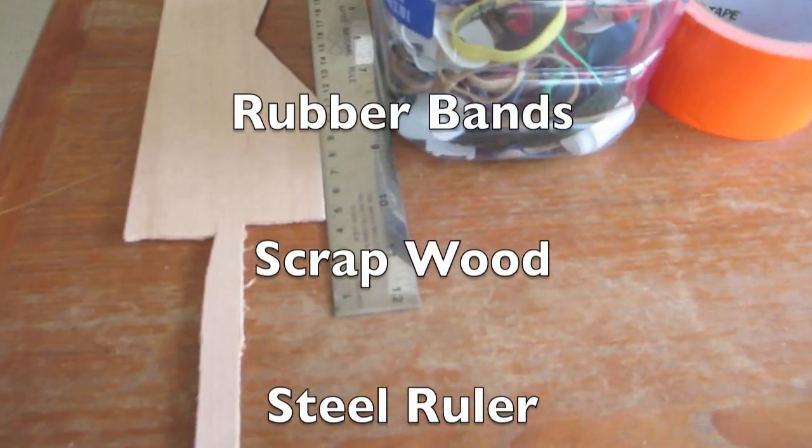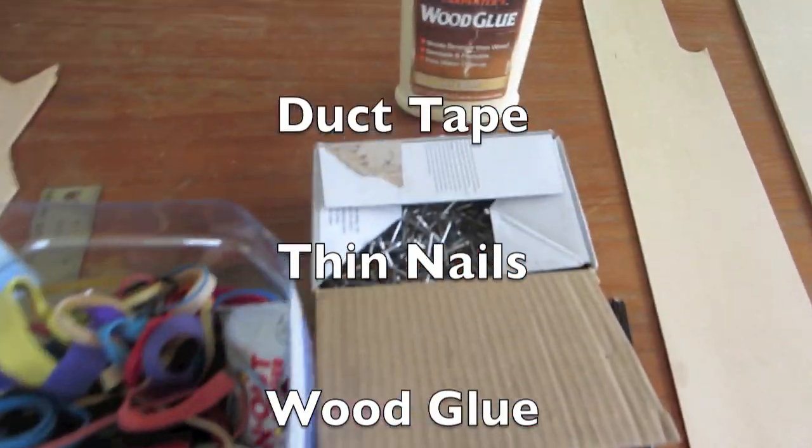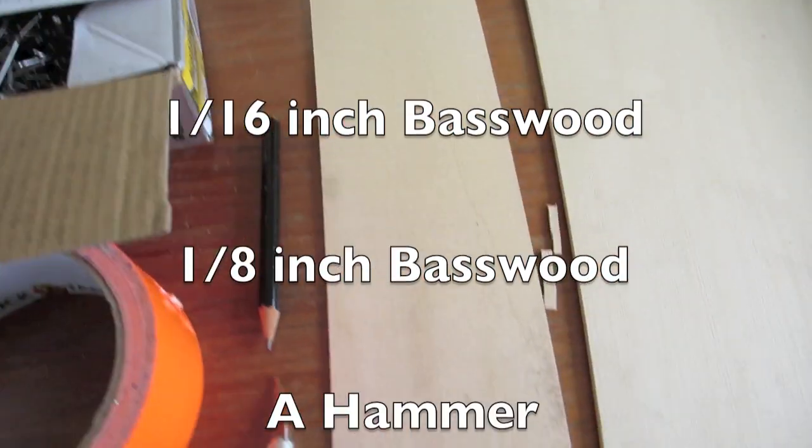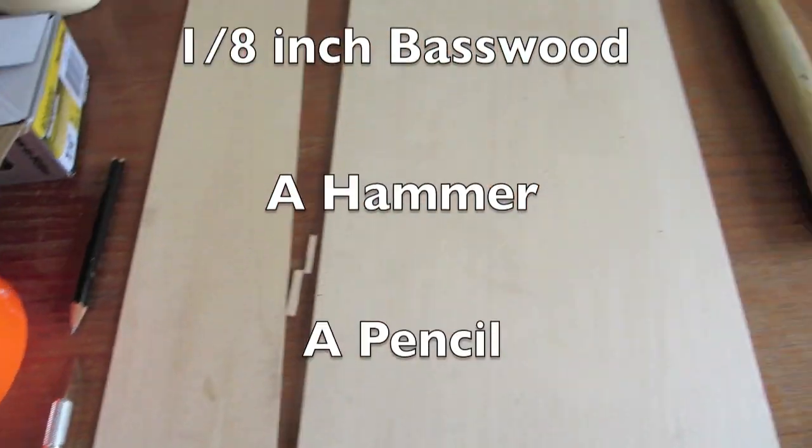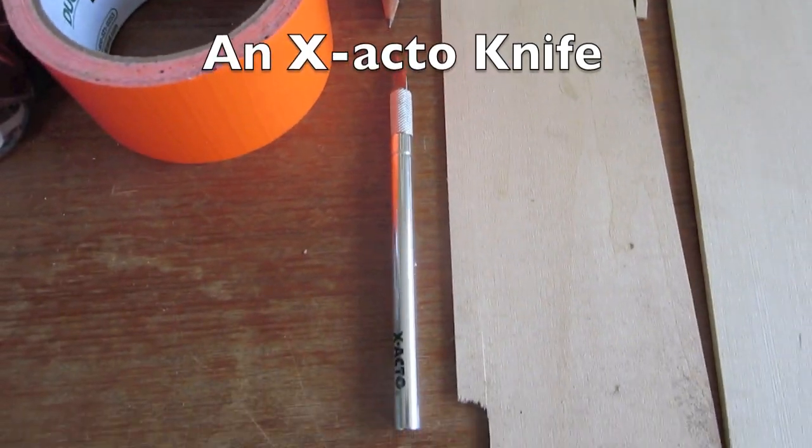You will need some scrap wood to cut on, a steel ruler, you don't need that many rubber bands, duct tape, nails, thin nails, wood glue, 1/16 inch basswood, 1/8 inch basswood, a hammer, a pencil, and an X-Acto knife.